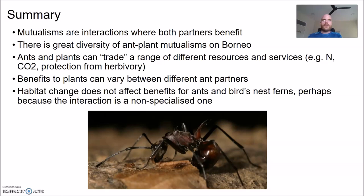So what have we found? Mutualisms are interactions where both species involved have some kind of benefit. There's a wide range of mutualisms between ants and plants on the island of Borneo. In these mutualisms, ants and plants can trade many different resources and services — nitrogen from ant waste, carbon dioxide, protection from herbivory, protection from encroaching plants, and so on. The benefits to plants can differ depending on the ant partners — some do a better job of protecting plants from herbivores. And for the nonspecific ant/birds-nest-fern interaction, anthropogenic habitat change doesn't much affect the interaction, perhaps because it's not very specialized — if one ant partner goes extinct, another ant can simply live inside the fern.